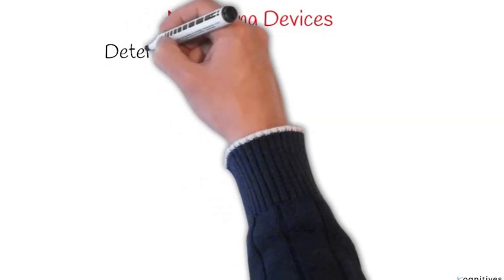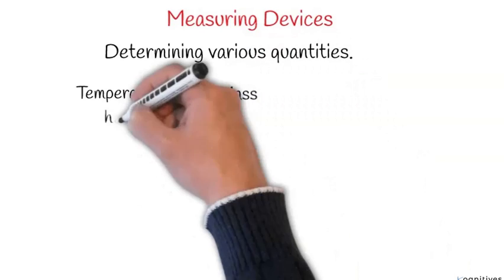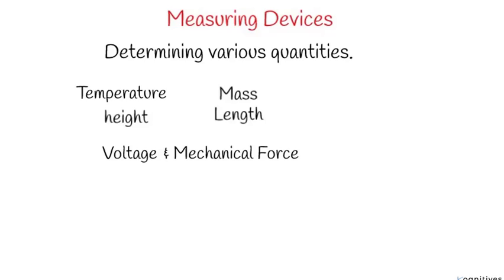What are measuring devices? Measuring devices are instruments for determining various quantities such as temperature, mass, height, length, voltage, and mechanical force. The quantities here are your mass, which is constant, your height, length, voltage, and mechanical forces. Let's take them one after the other, because questions are most likely to come from this area. Under this session, we're going to be talking about the measurement of these quantities.